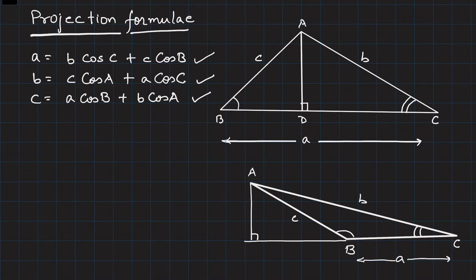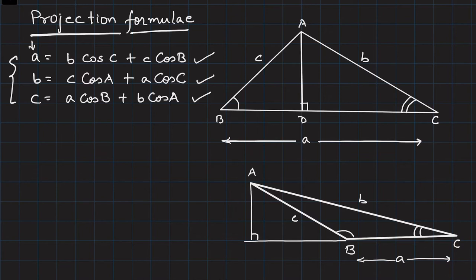First, let's understand how to write and remember these formulas. If I'm writing side a, there will not be any angle A on the right-hand side. The other two sides are b and c, so it will be b·cos C and c·cos B — notice that side b is paired with the other angle C, and side c is paired with the other angle B.